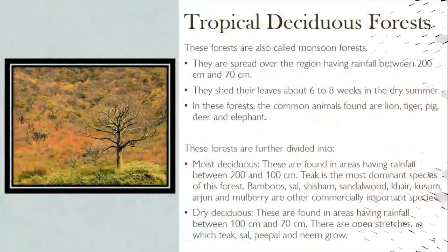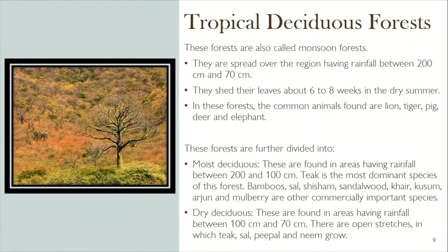Tropical Deciduous Forest: these forests are also called monsoon forests. They are spread over regions having rainfall between 70 and 200 centimeters. They shed their leaves for about six to eight weeks in the dry summer. Common animals found in this forest are lion, tiger, pig, deer, and elephant.